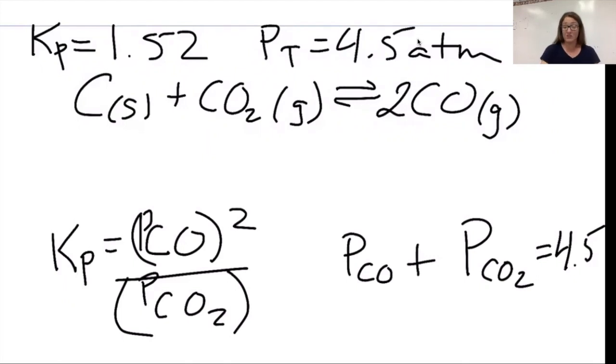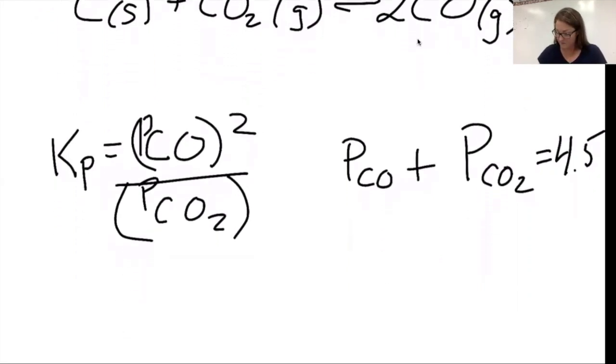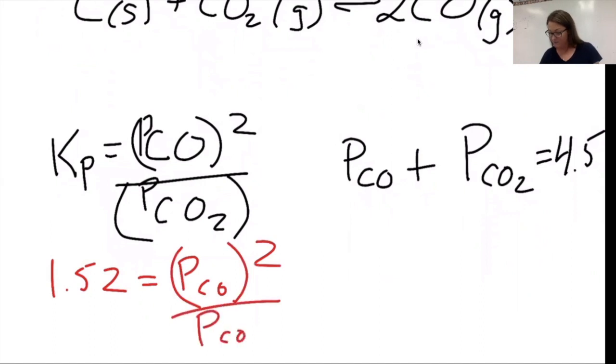I have here two equations, two unknowns. Anytime I have two equations and two unknowns, it's solvable. I can plug in 1.52 here. That'll equal PCO squared over PCO2. On the right, I still have PCO plus PCO2 equals 4.5. I'm going to solve by substitution.